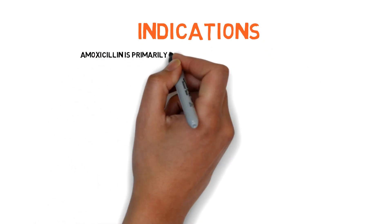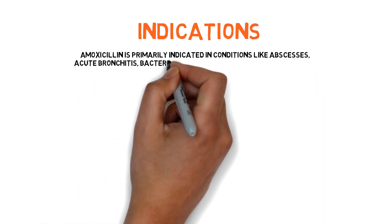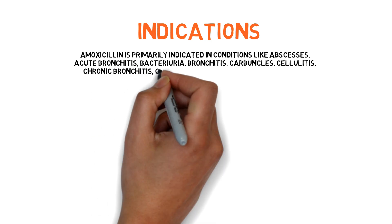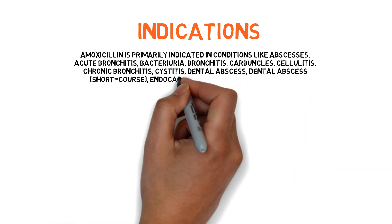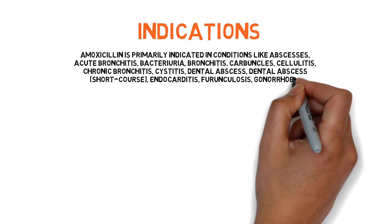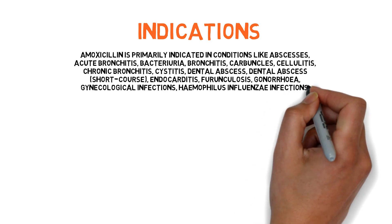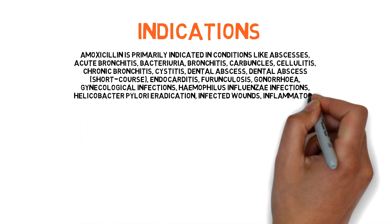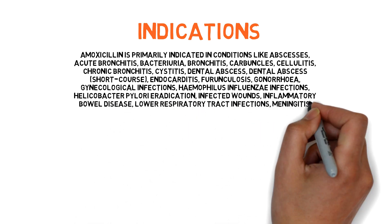Amoxicillin is primarily indicated in conditions like abscesses, acute bronchitis, bacteriuria, bronchitis, carbuncles, cellulitis, chronic bronchitis, cystitis, dental abscess, endocarditis, furunculosis, gonorrhea, gynecological infections, Haemophilus influenzae infections, Helicobacter pylori eradication, infected wounds, inflammatory bowel disease, and lower respiratory tract infections.